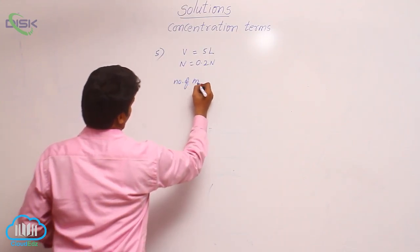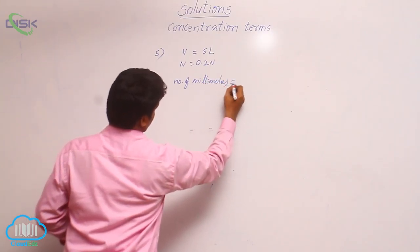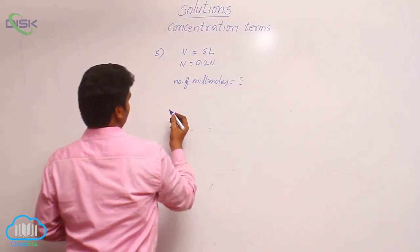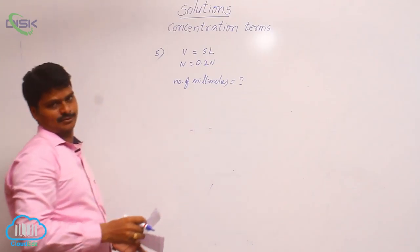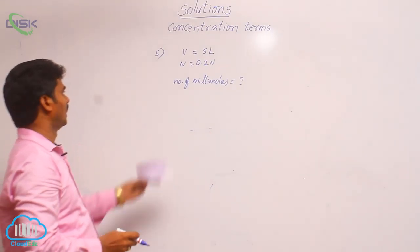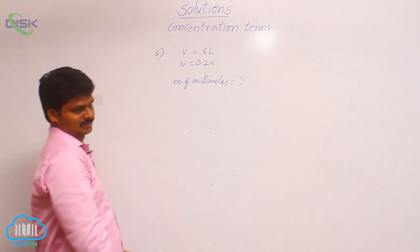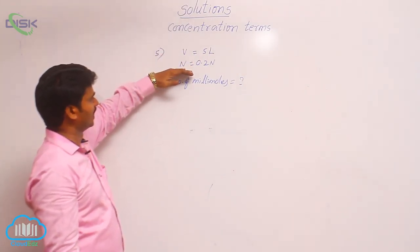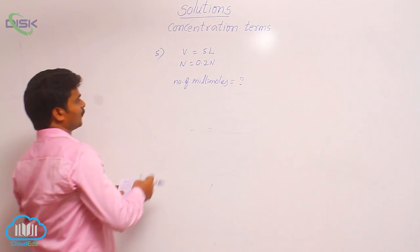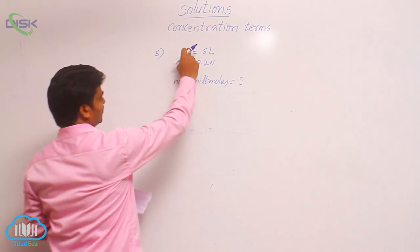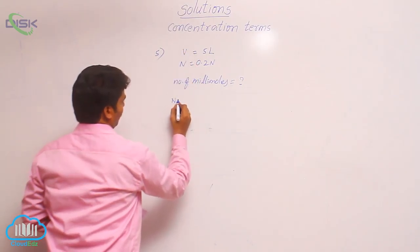Number of millimoles is asked. H2SO4 is given. How to find out number of millimoles? We have information about volume and normality. From these two, we can write a formula.